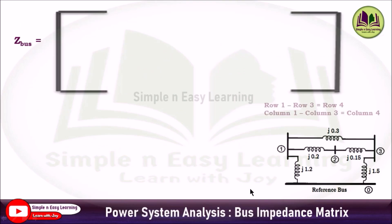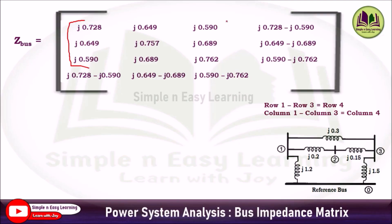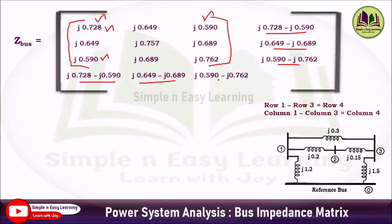We use row 1 minus row 3 for row 4 and column 1 minus column 3 for column 4, because the reactance j0.3 is connected between bus 1 and bus 3. Starting from the 3×3 matrix obtained after step 4, the fourth column is: Z11 − Z13 = 0.728 − 0.590, and similarly for the other elements. The fourth row is obtained in the same way.